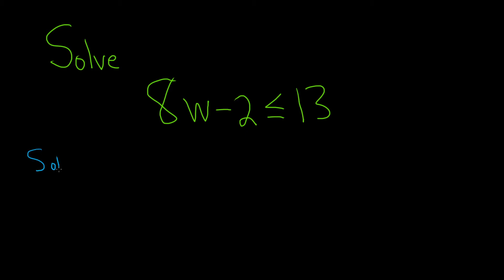Let's go ahead and work through it. The first thing you want to do is add the 2 to both sides. This way you have the 8w by itself. So we have 8w less than or equal to 15.